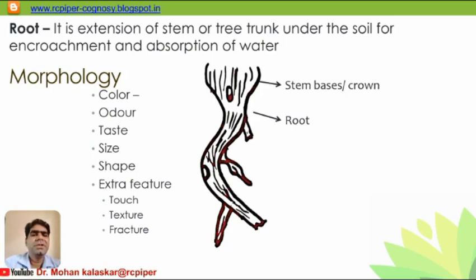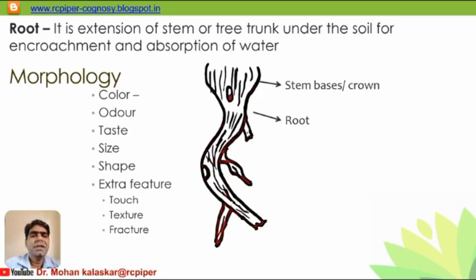Morphologically, we study all the characteristics perceived by the organs of senses: color, odor, taste, size, shape, and extra features. Color, odor, and taste are subjective characteristics, meaning they change from person to person, so they are not very useful when we do not have a representative sample to compare with the standard. Size and shape can be measured in units — these are objective characteristics. Extra features are characteristics that cannot be classified into the above five categories.